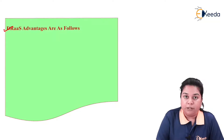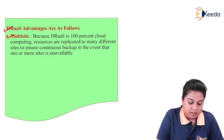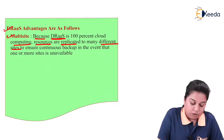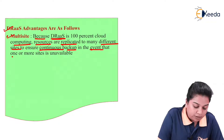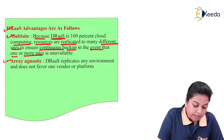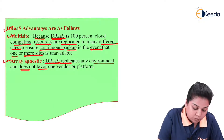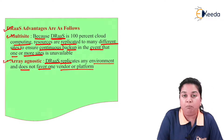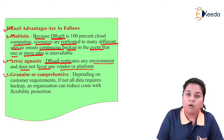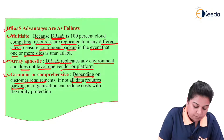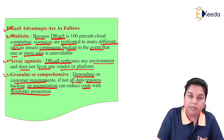Advantages of disaster recovery as a service: First is multi-site — because DRaaS is 100% cloud computing, resources are replicated to many different sites to ensure continuous backup in the event that one or more sites is unavailable. Second is array agnostic — disaster recovery as a service replicates any environment and does not favor one vendor or one platform. Third is granular or comprehensive — depending on customer requirements, not all data requires backup, so an organization can reduce costs with flexible protection.